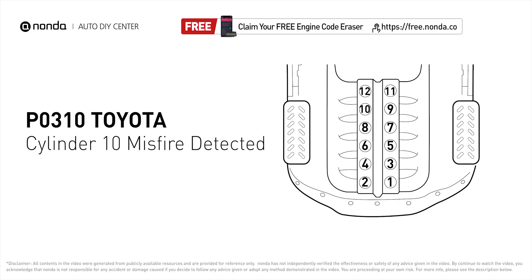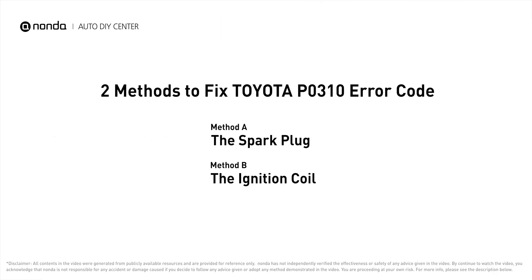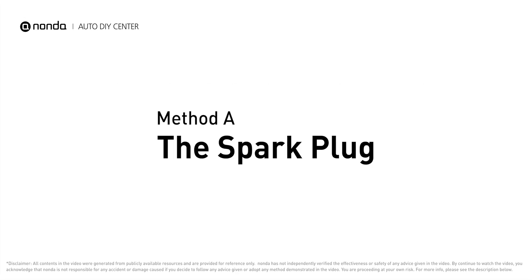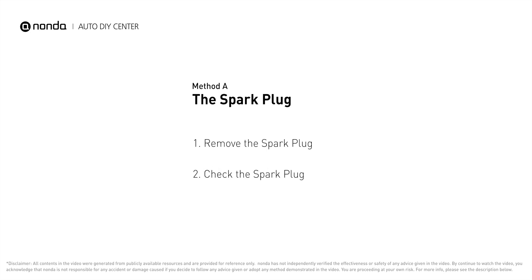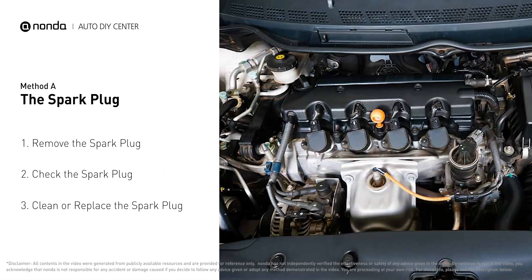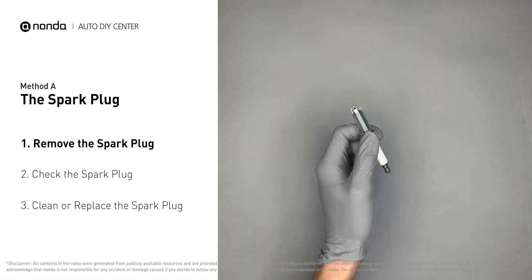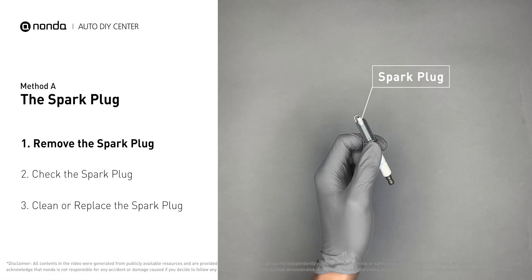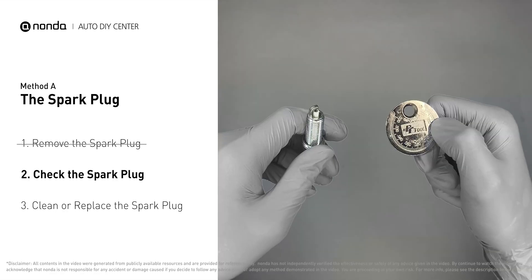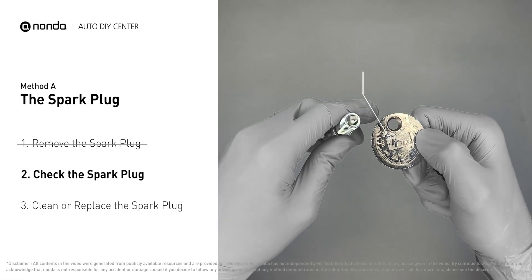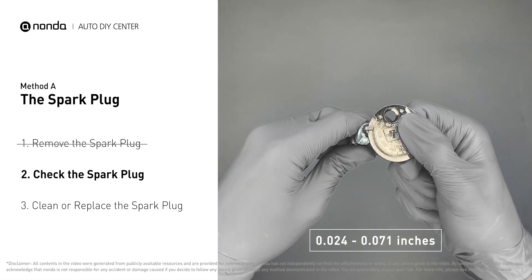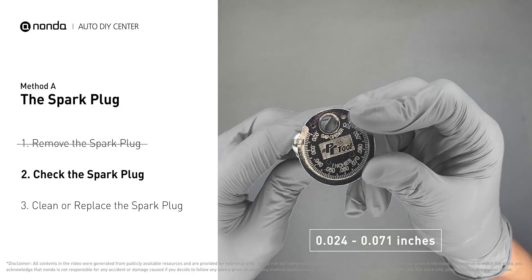Here are two of the most practical solutions to fix Toyota's P0310 error code. Method A: the spark plug. The spark plugs are located at the engine end of the wires, under the plug covers. First, carefully remove the spark plug and use a spark plug gapper to check the spacing. Normally, the spacing should be between 0.024 to 0.071 inches.